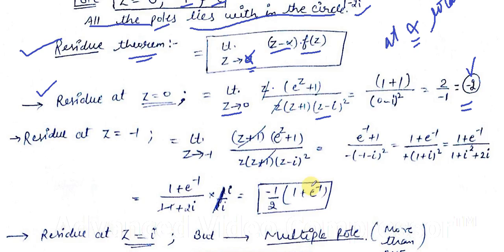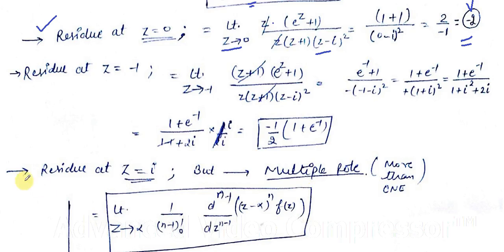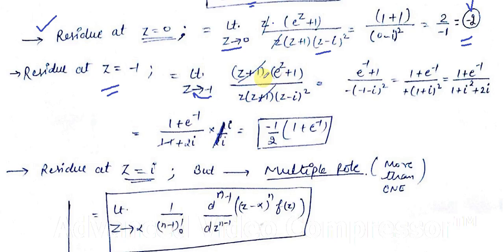For the residue at z = −1: we compute the limit as z → −1 of (z+1)·f(z). The (z+1) factors cancel, and substituting z = −1 into the remaining function and simplifying gives us the residue at z = −1.